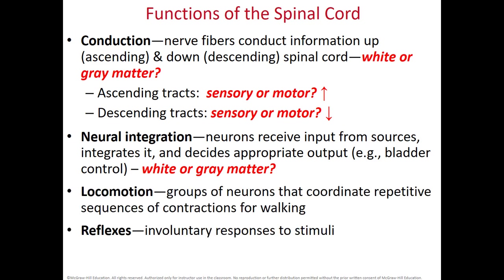Some other functions of the spinal cord include locomotion — basically coordinating repetitive motions for walking. You need your brain for starting to walk and adjustments, but the actual sequence of movements only requires your spinal cord. Finally, your spinal cord is used for reflexes, which is important for posture, coordination, protecting the body, and we also use them to help diagnose certain disorders.